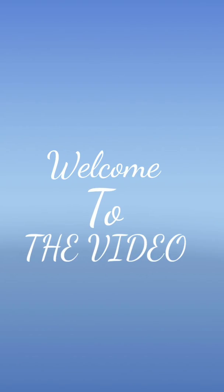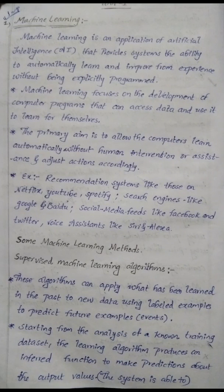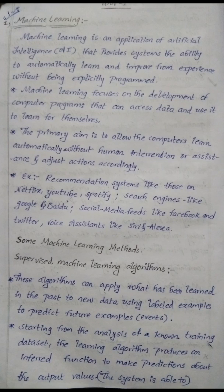Hi guys, welcome to our channel. Day before JN TV exams, now we will start with the subject Machine Learning. Machine learning is an application of artificial intelligence that provides the system the ability to automatically learn and improve from experience without being explicitly programmed. For example, Tesla self-driving cars take actions while driving — this is a machine making decisions.